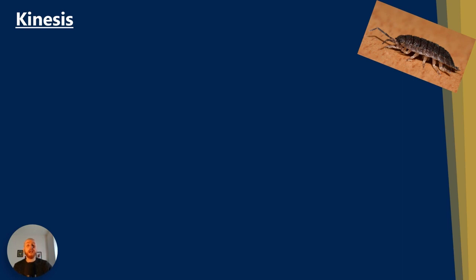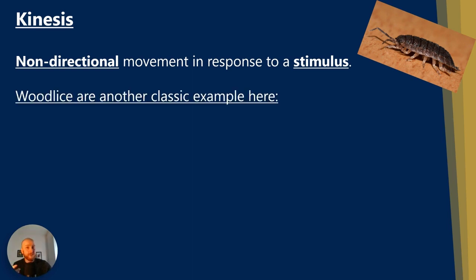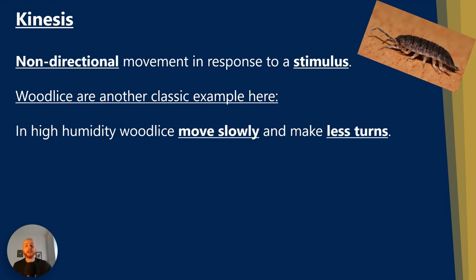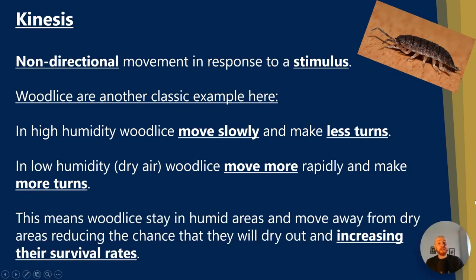Kinesis is the second type of movement — it is the non-directional movement in response to a stimulus. Wood lice are again a classic example. In high humidity, wood lice move slowly and make fewer turns. In low humidity — meaning dry air — wood lice move more rapidly and make more turns. This means that wood lice stay in humid areas and move away from dry areas, meaning there's less chance they will dry out and more chance they will survive and reproduce.